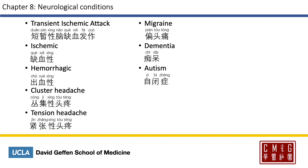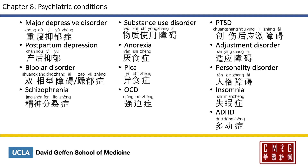Transient ischemic attack is called 短暂性脑缺血发作. Ischemic is 缺血性, and hemorrhagic is 出血性. Cluster headache is 丛集性头痛, and tension headache is 紧张性头痛. Migraine is 偏头痛, 偏 meaning to one side. Dementia is 痴呆. And autism is 自闭症.